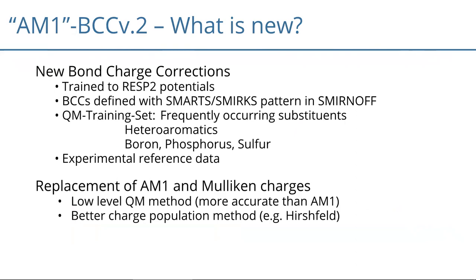We put AM1 in parentheses because we actually want to replace it with another method to reduce the magnitude of the BCCs — if we start already close to the target charges with our fast method, we can use BCCs to really fine-tune our charge model. Going along with that is the choice of charge population method: we probably don't want to use Mulliken charges anymore, and may replace them with something like Hirshfeld charges.